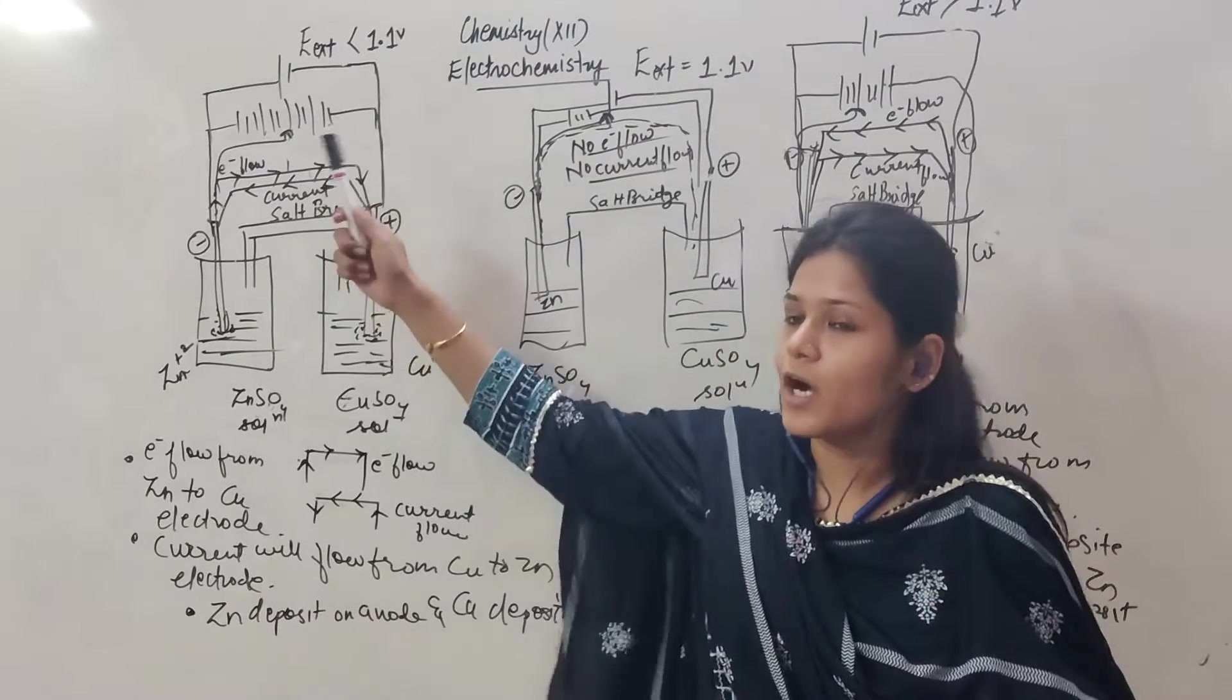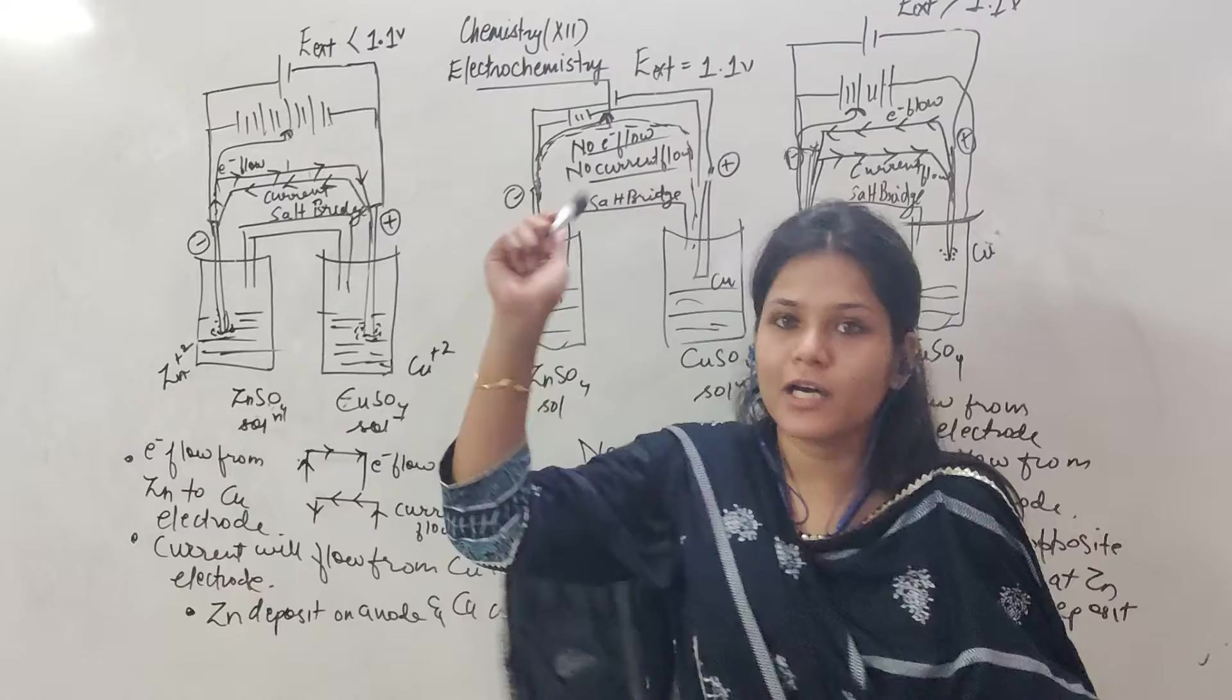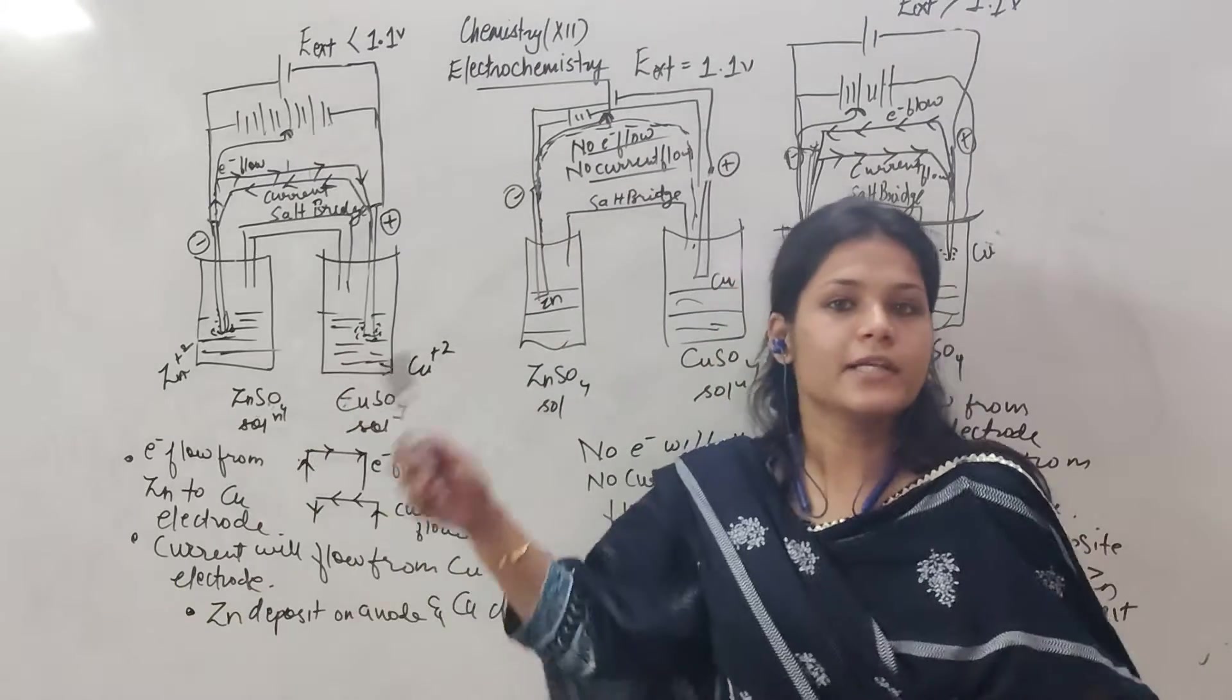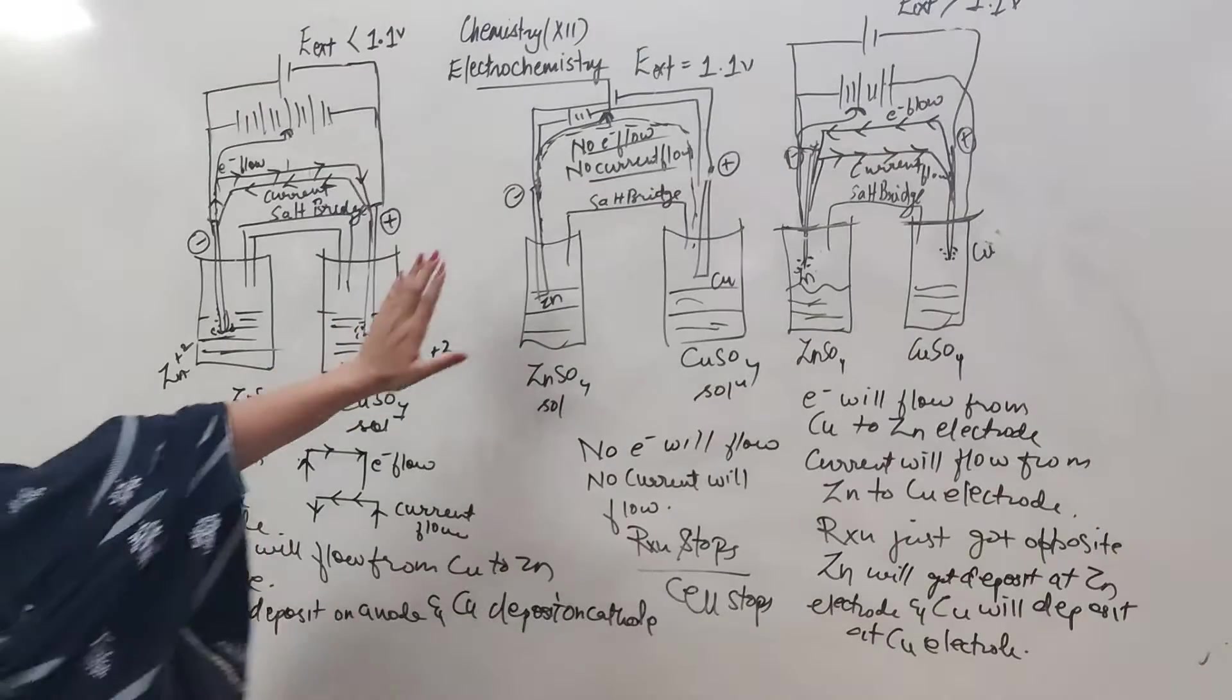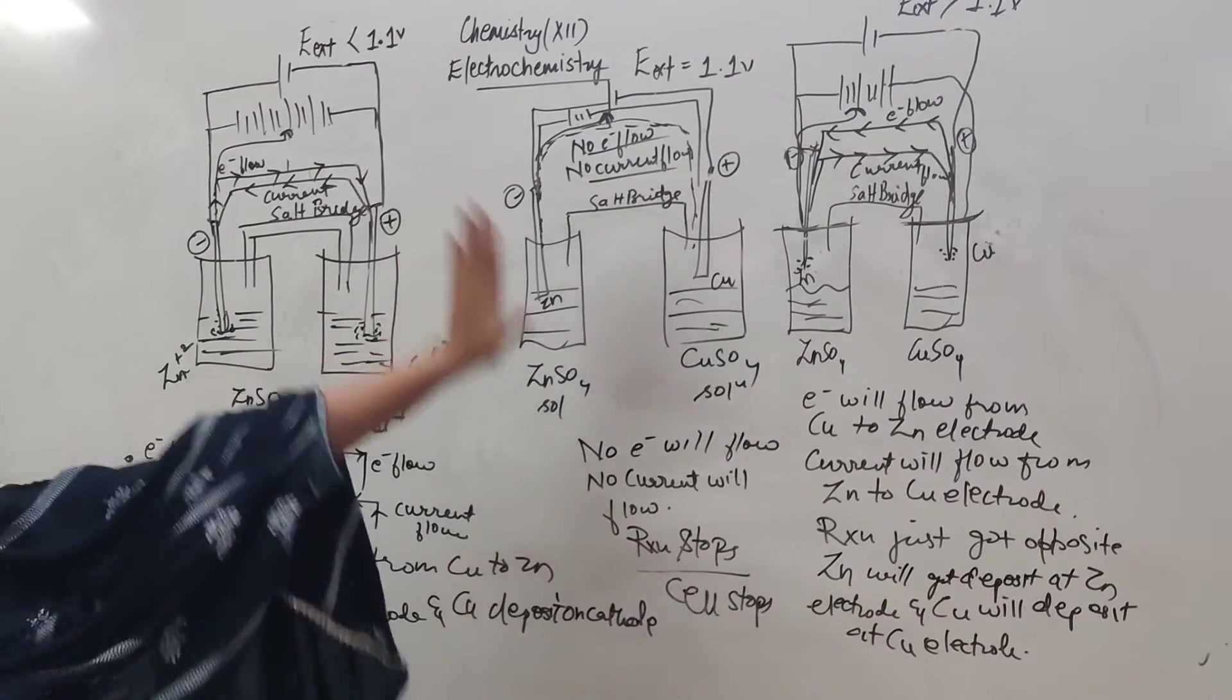Now if the external potential is equal to 1.1, then the cell stops.